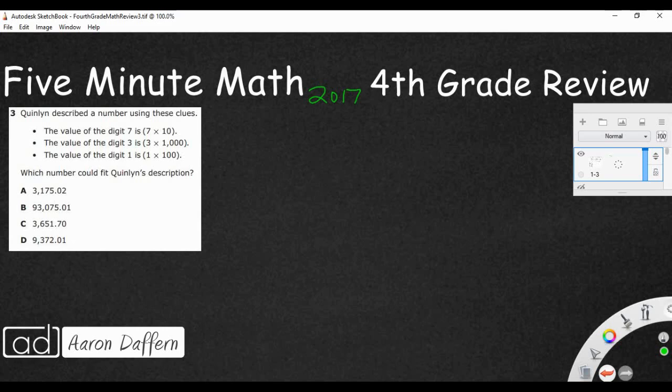And you see expanded notation right here. It's the way that we're writing this 7 times 10, 3 times 1,000, 1 times 100. That's showing you that these are the place values we're looking at. The 7 is in the tens place, the 3 is in the thousands place, the 1 is in the hundreds place. So they're giving us a mystery number, and all we know are the value of these three digits. So let's take a look at our answers.